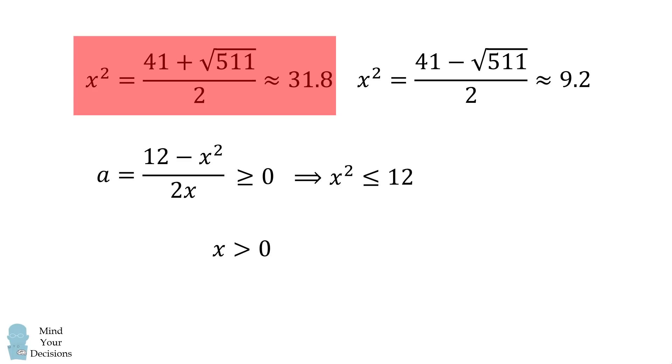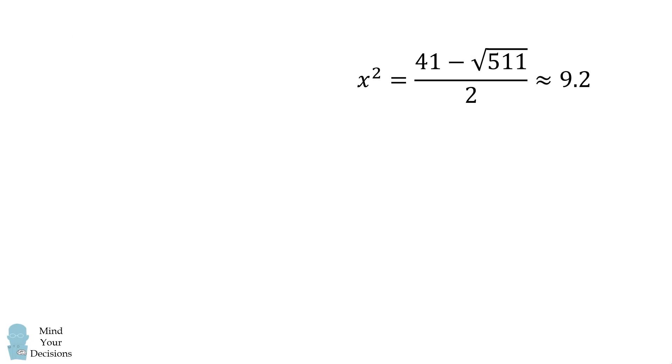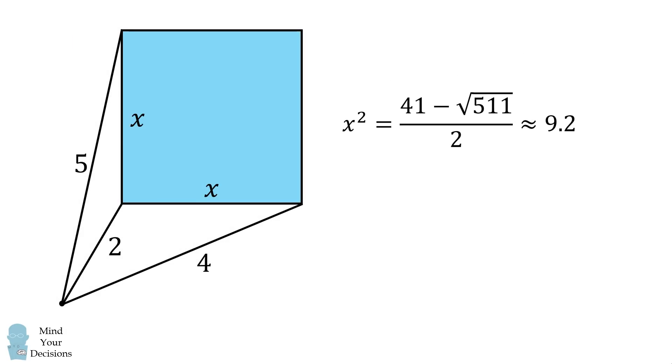Therefore, we cannot have x squared be approximately equal to 31.8. We exclude this possibility. We thus have the answer that x squared, or the area, is equal to 41 minus the square root of 511 all over 2. And that's the answer.